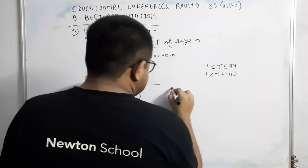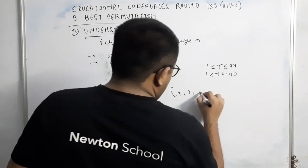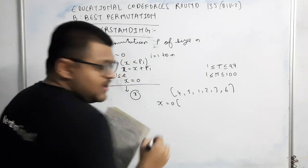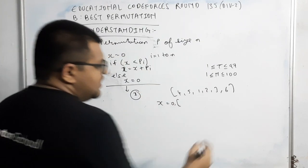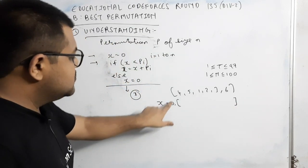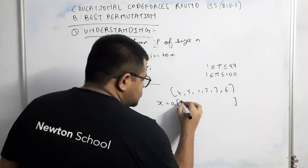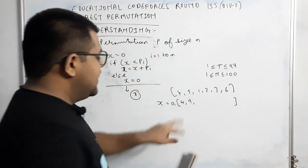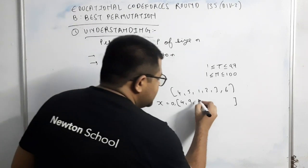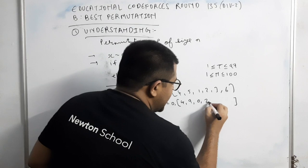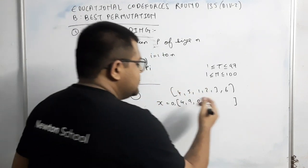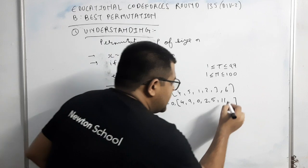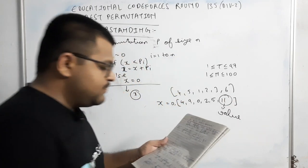For example, the permutation of size n, 4, 5, 1, 2, 3, 6. इसमें x की value कैसे change होगी? सबसे पहले 0 होगी initially. फिर जब हम traverse करना start करेंगे, Now 0 is less than 4, so it will be added to x. So 0 plus 4 is 4. Now 4 is less than 5, yes. So again it would be added, so 4 plus 5 is 9. 9 is greater than 1, so now x would be assigned 0. 0 is less than 2, so 2 will be added to x. 2 is less than 3, so 3 would be added to 2. 5 is less than 6, so again 6 would be added to 5.